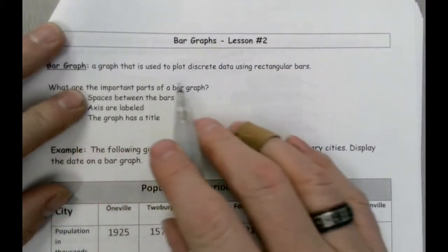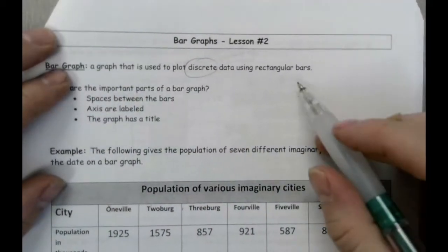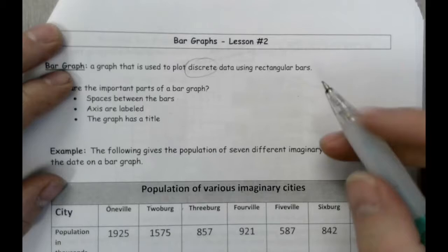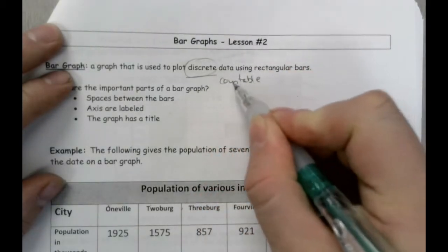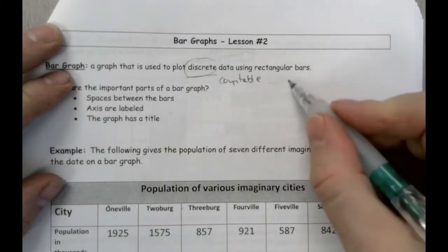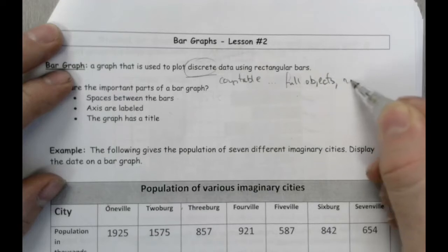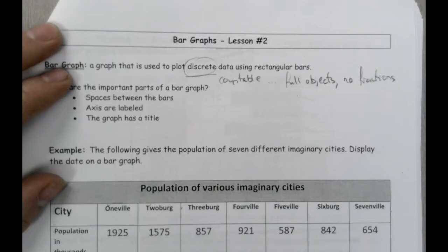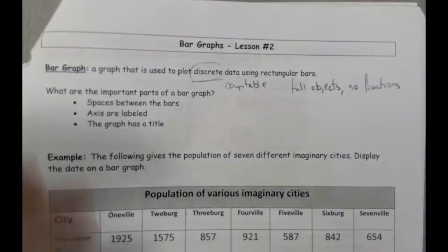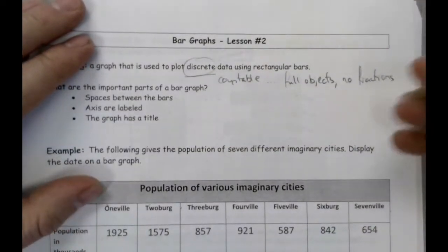A bar graph is a graph that's used to plot what we call discrete data using rectangular bars. What we mean by discrete is it's countable — we're talking about full objects here. There's no fractions. So when you're counting people in a room, you don't count fractional people. There's always a whole number of people there. So that's what we mean by discrete data: countable objects.